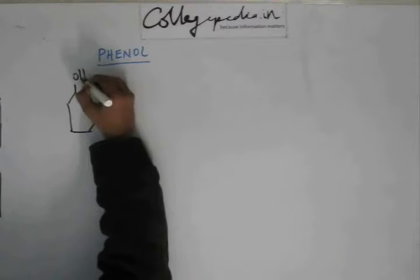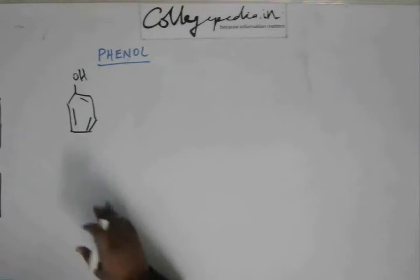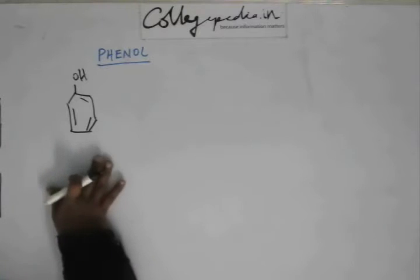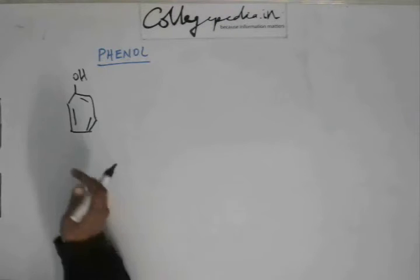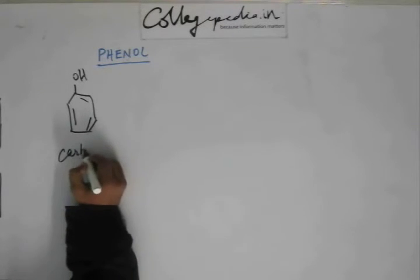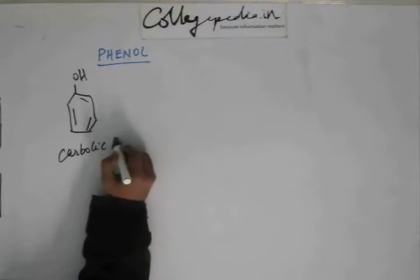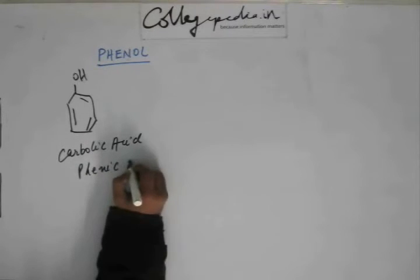Generally when we say phenol, we generally mean this compound. Otherwise by definition, phenols are all compounds having a hydroxy group on an aromatic ring. But generally by phenol we mean this compound, which is also called carbolic acid. This is also called phenic acid.